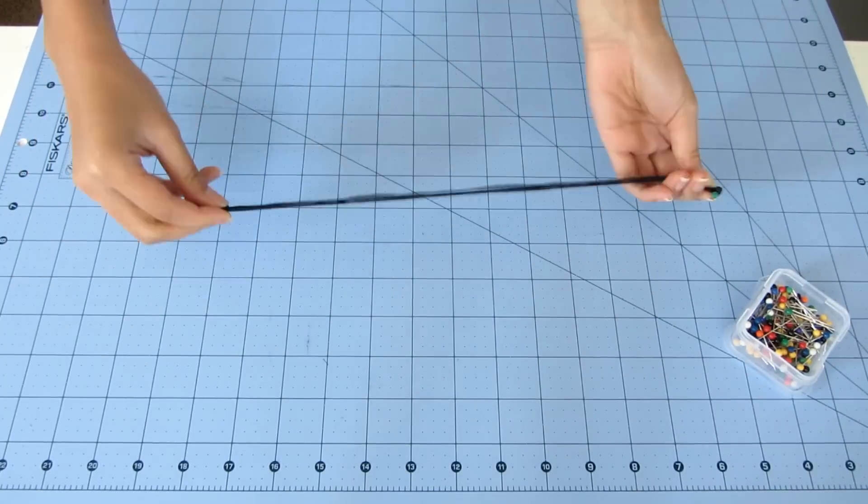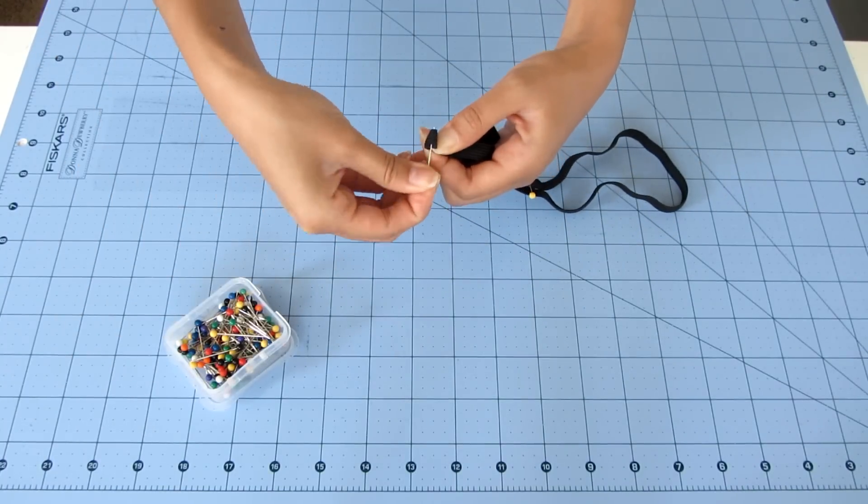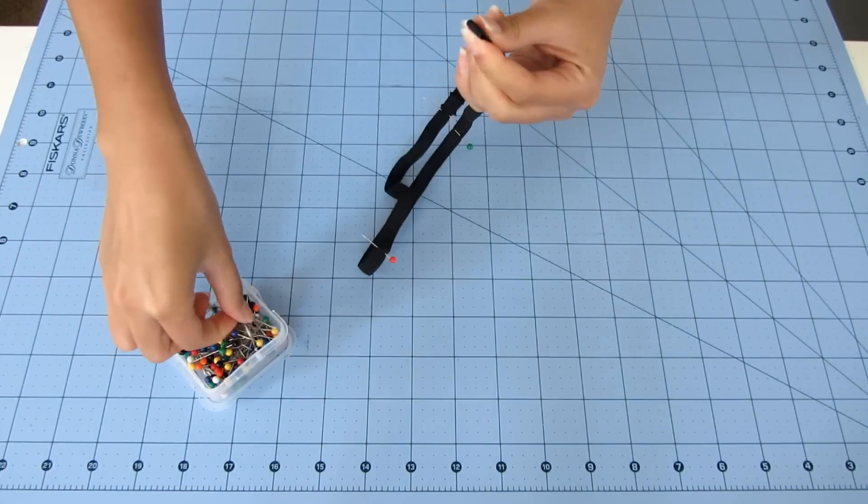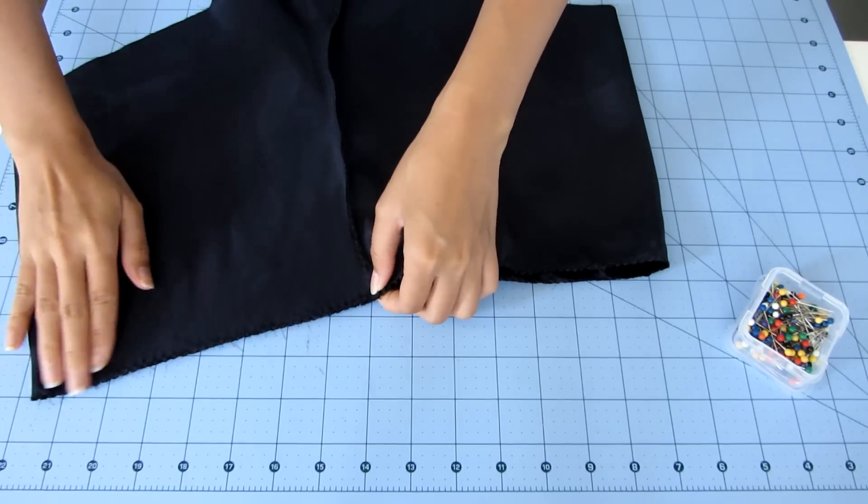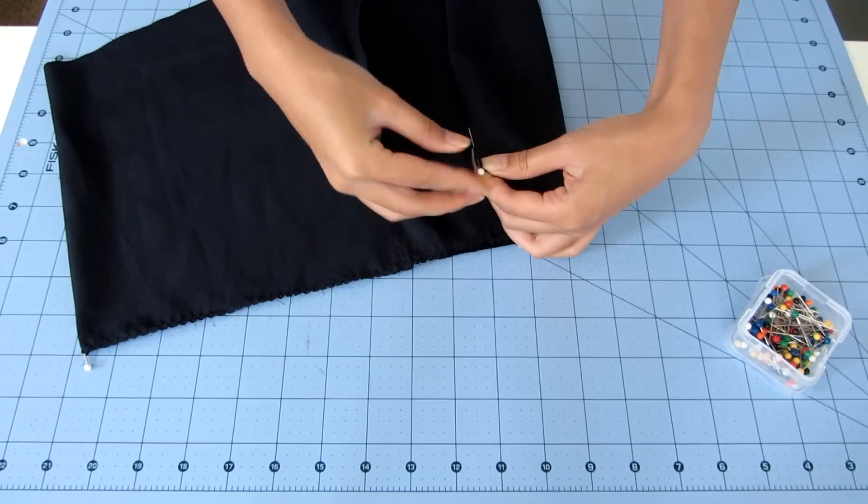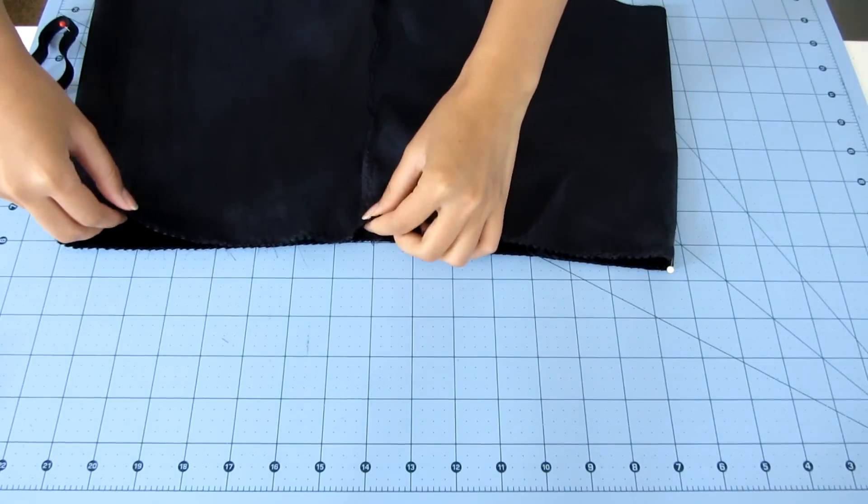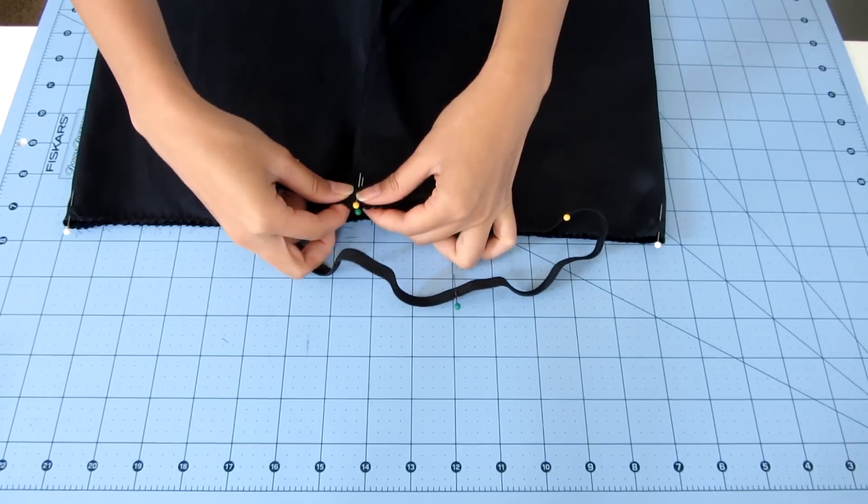Next, quarter it with pins by folding it in half then marking the folds with pins, and then folding it half the other way so the previous pins line up and marking the folds again with pins. Quarter the shorts as well using the front and back seams as a guideline. Then sew the elastic to the shorts by lining up the first pin then sewing it while you stretch the elastic to the next pin.